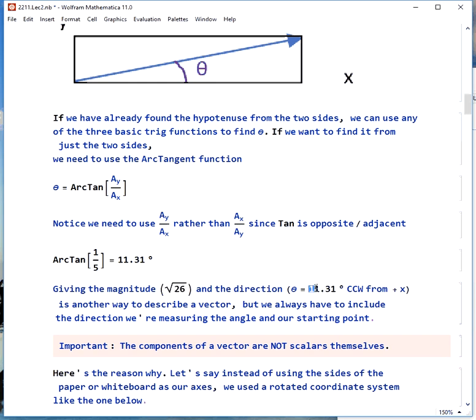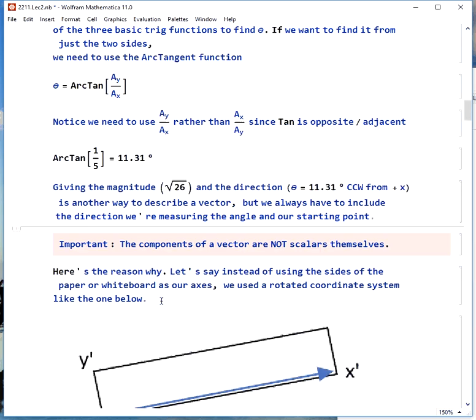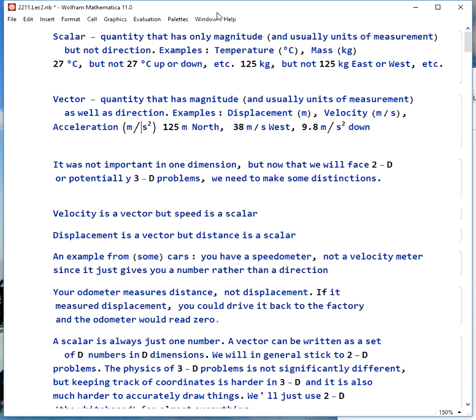So if we give the magnitude, square root of 26, and the direction, 11.31 degrees counterclockwise from positive x, this is another way to describe a vector. And this part is important, the counterclockwise from positive x, because otherwise we don't really know the angle that you're talking about.